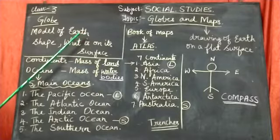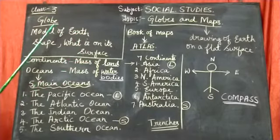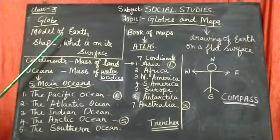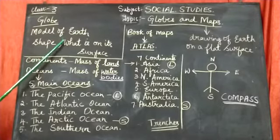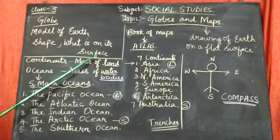How earth looks like and what is on its surface and earth is round like an orange. Earth is round like an orange and now you all have come to know that globe is a model of earth and we need globe to show us how exactly the earth shape is and what is on its surface.